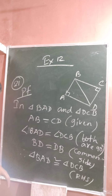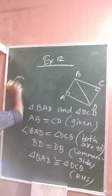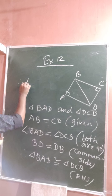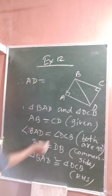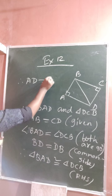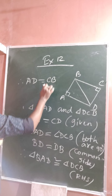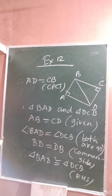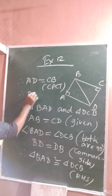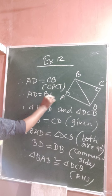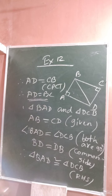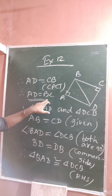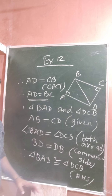All of you know that if two triangles are congruent, then the corresponding parts must be equal. Therefore, AD equal to CB, which is CPCT. But it is given that we have to prove AD equal to BC. CB and BC are the same, so that is why we write the last line as AD equal to BC. Clear?